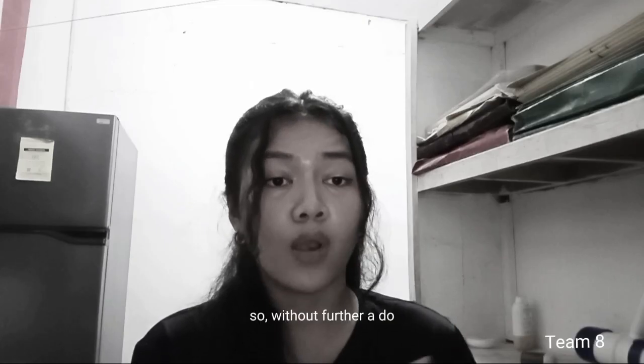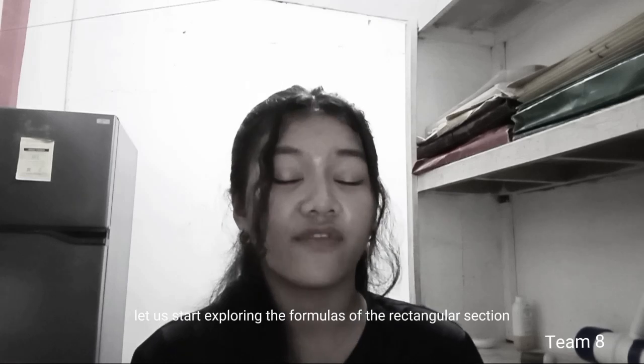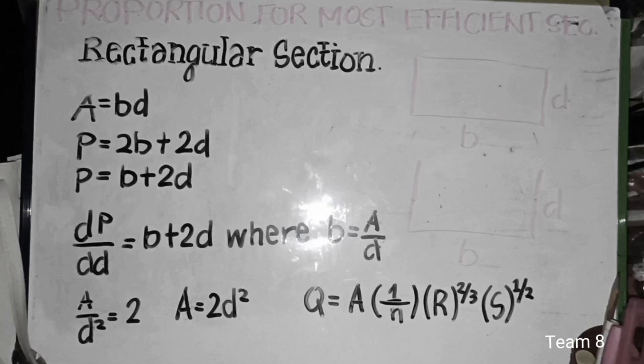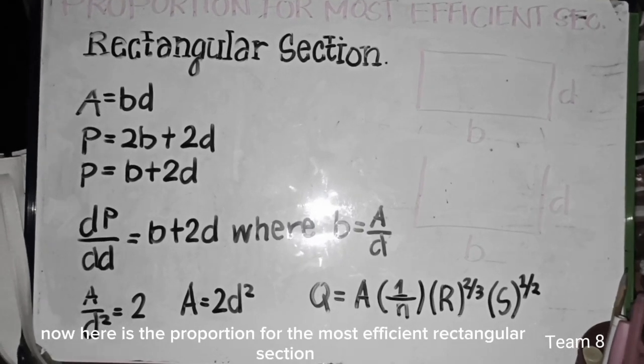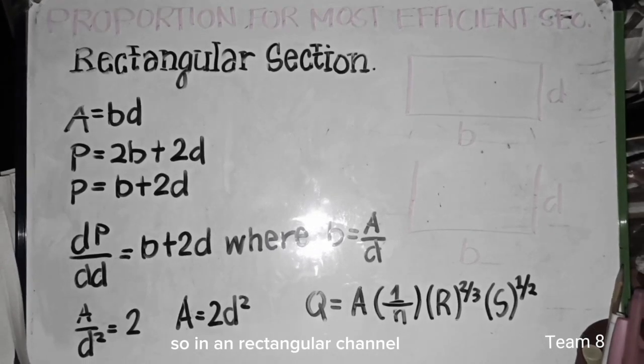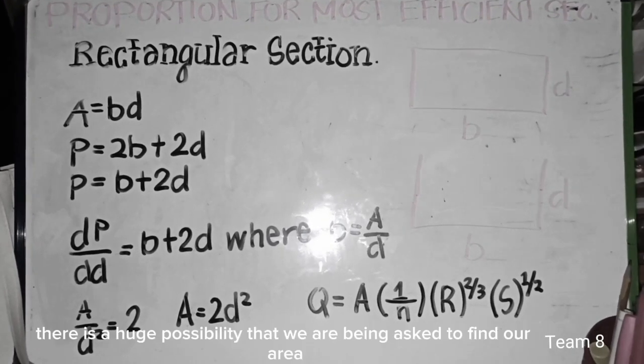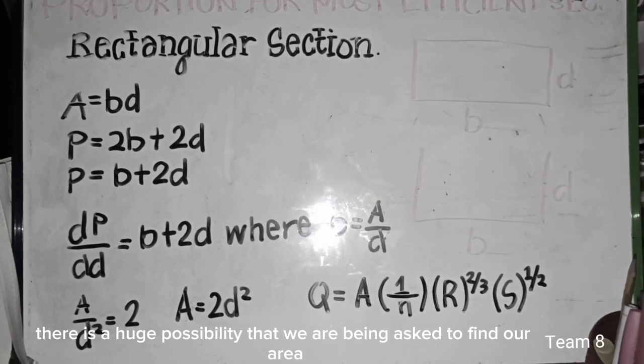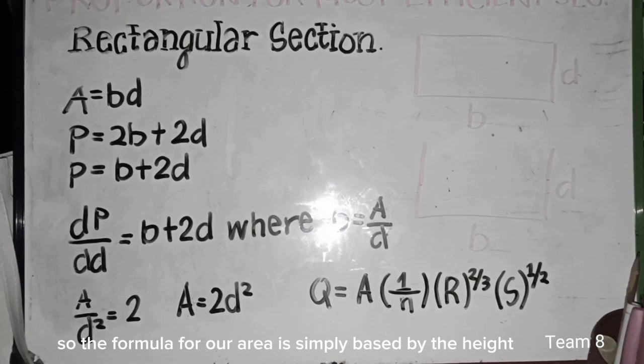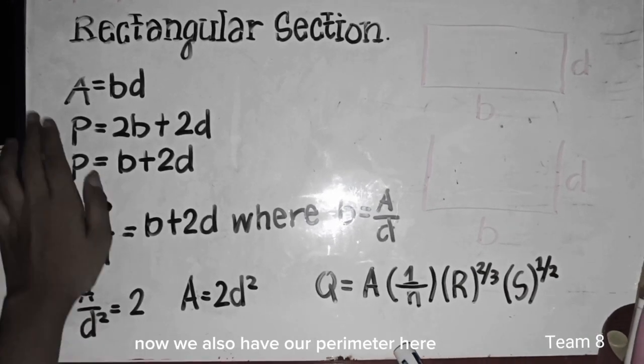So without further ado, let us start exploring the formulas of the rectangular section. Now, here is the proportion for the most efficient rectangular section. So in a rectangular channel, there is a huge possibility that we are being asked to find our area. So the formula for our area is simply base times the height.